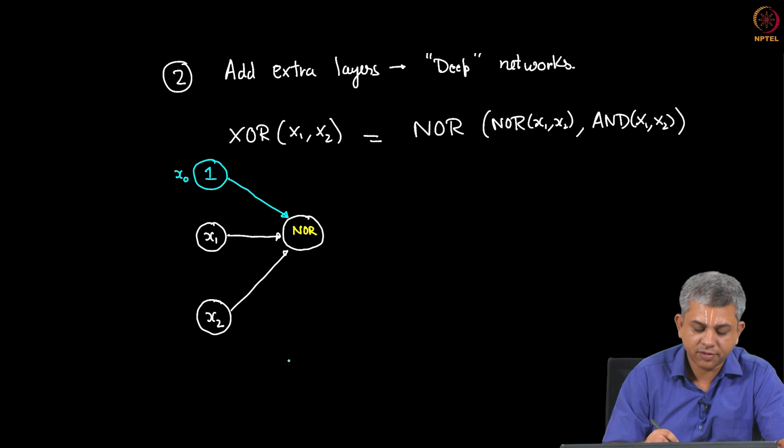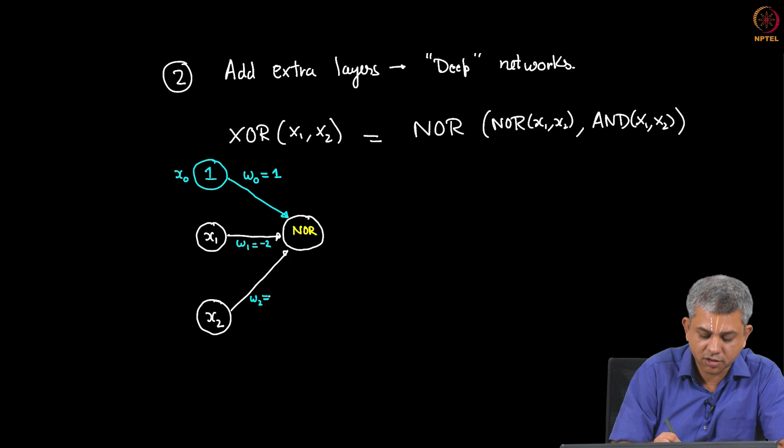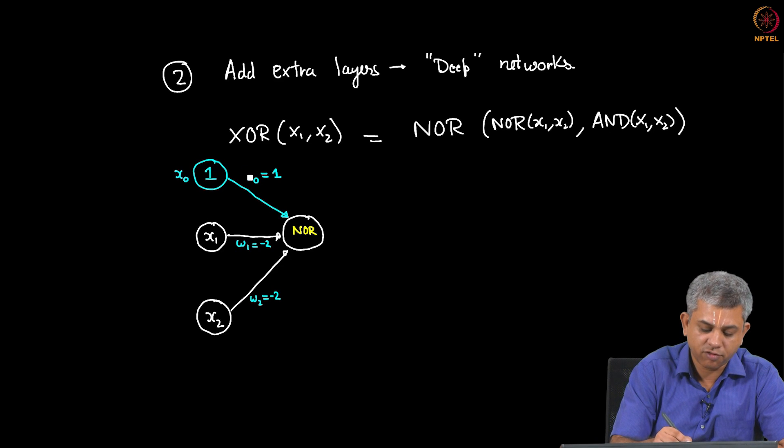Let us call these weights something. Remember for the NOR gate W0 was 1, W1 was minus 2, W2 was minus 2. I am going to erase this here for a particular reason, otherwise the figure would get very cluttered.